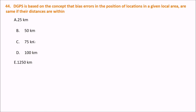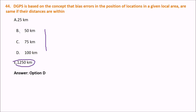DGPS (Differential GPS) is based on the concept that bias errors in the position of a location in a given local area are the same if their distances are within a certain range in kilometers.